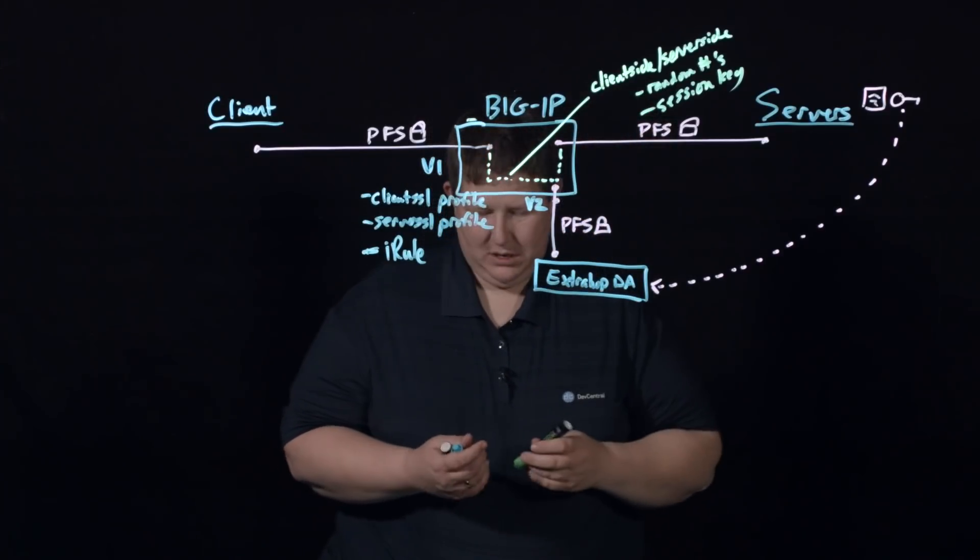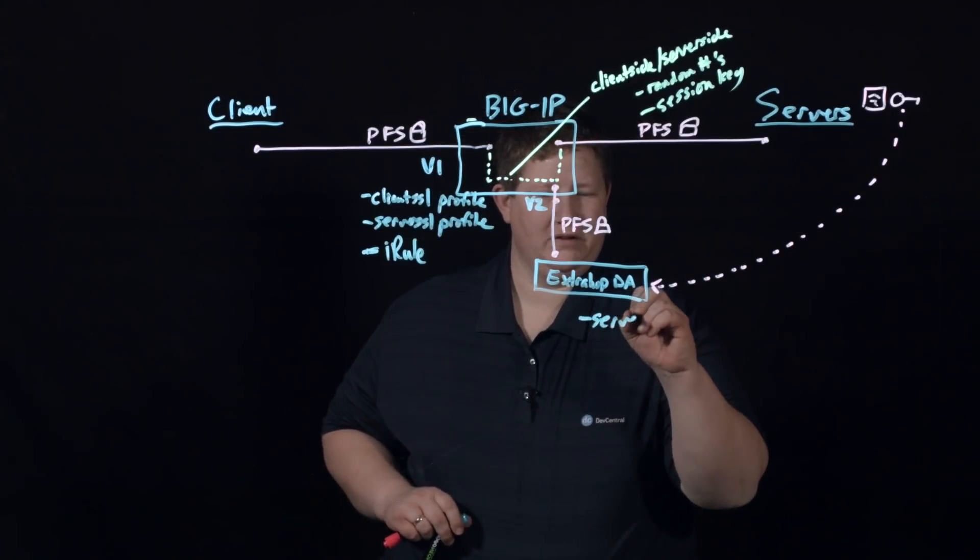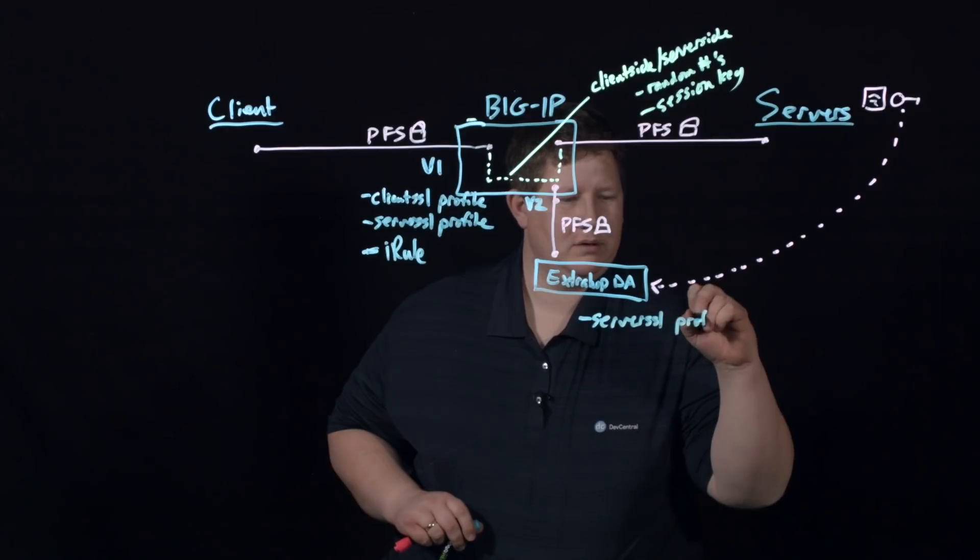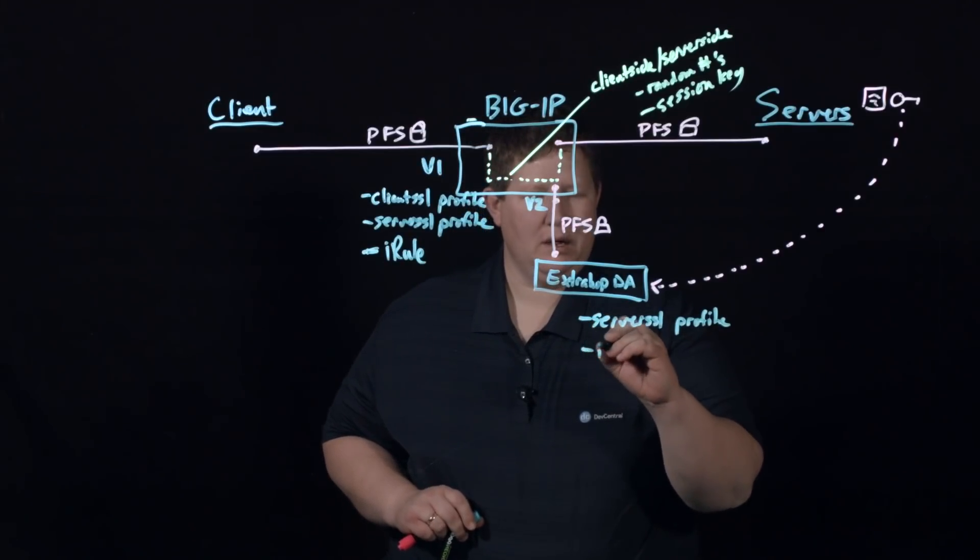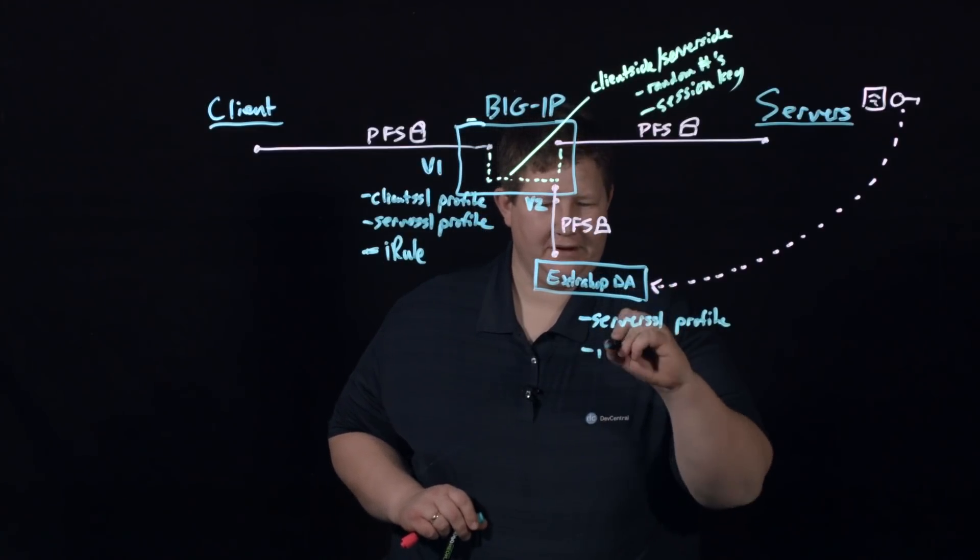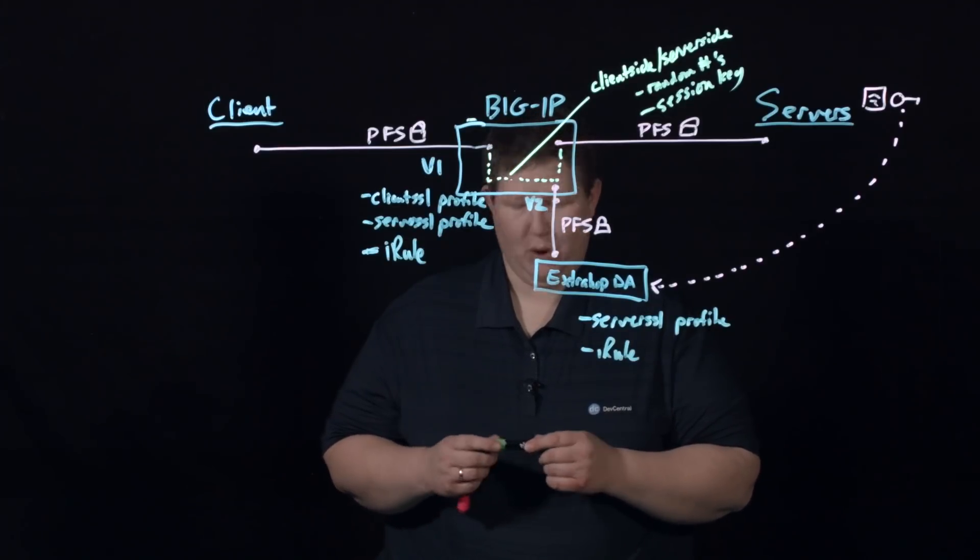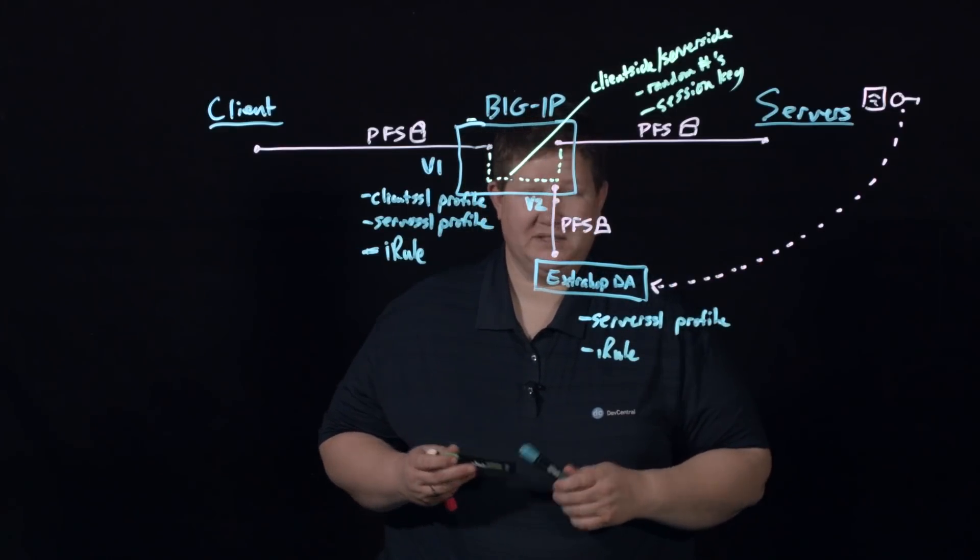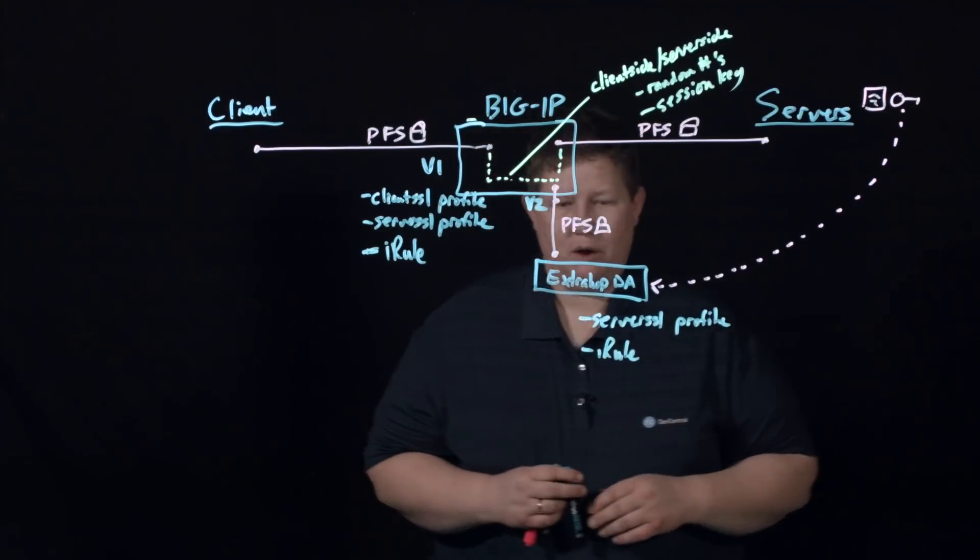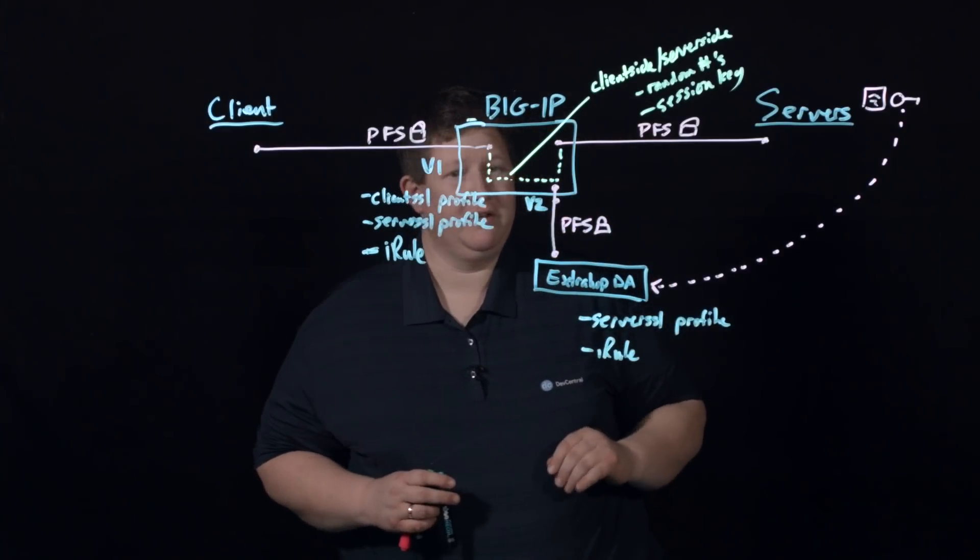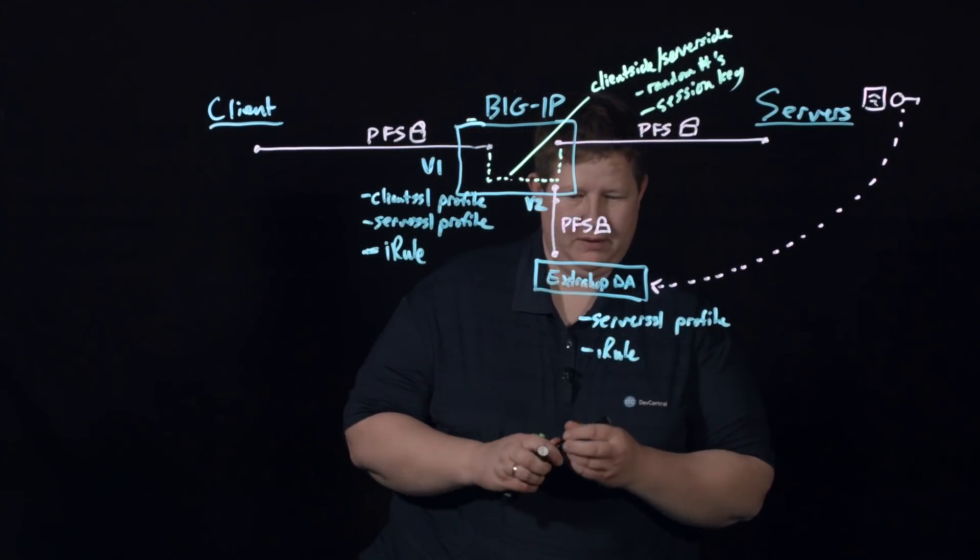And then on this sideband connection, we have another iRule over here. So on this side, we have a server SSL profile, and this is to make sure we're using PFS to this ExtraHop Discovery appliance. And then of course the pool for whatever device or devices you're sending traffic to. And then the iRule here manages the protocol communication because the sideband connection in and of itself is not protocol aware. You have to manage that protocol. And so the second iRule handles that and it manages the one connect relationship.